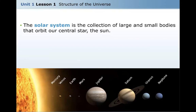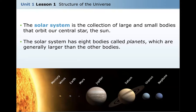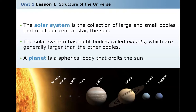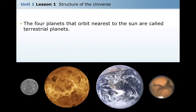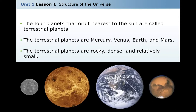The solar system is the collection of large and small bodies that orbit our central star, the sun — a very small part of the galaxy that we belong to. The solar system has eight bodies called planets, which are generally larger than the other bodies. A planet is a spherical body that orbits the sun. The four planets that orbit nearest the sun are called terrestrial planets: Mercury, Venus, Earth, and Mars. Terrestrial planets are rocky, dense, and relatively small.